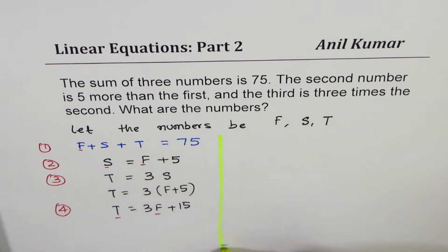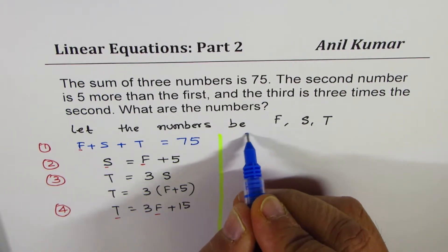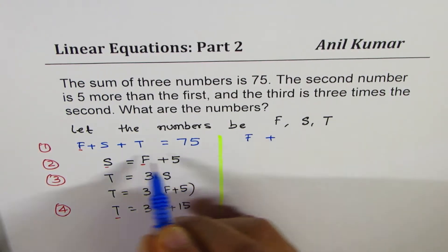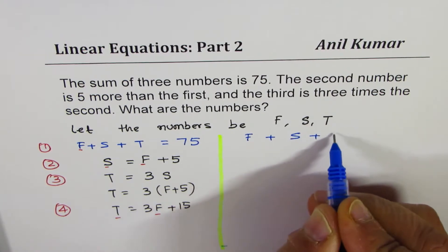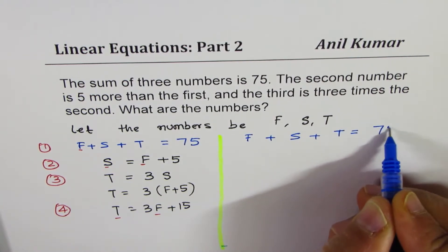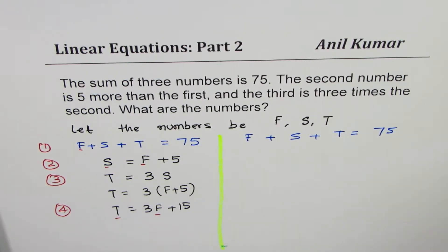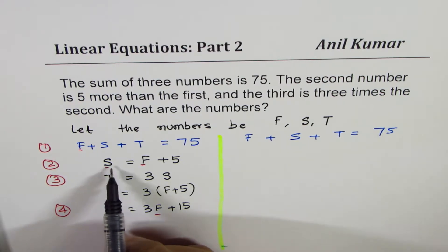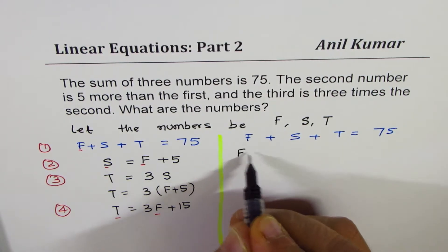Now I will write: instead of S I'll write F + 5, so we'll keep F as such. The first number, the second number will be written as the first number plus five.